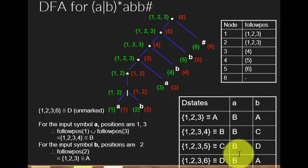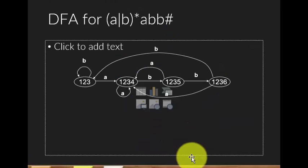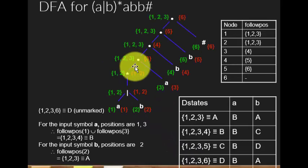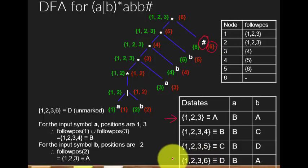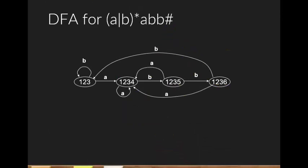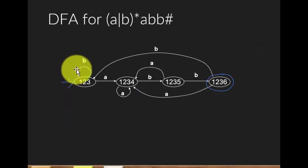That's the final transition table. The last step is to draw the DFA from this table. For the accepting state: whichever state contains position 6 (the hash symbol) is the accepting state — so state {1,2,3,6} (state D) is the accepting state. State {1,2,3} is the start state. That's how you convert a regular expression to a DFA using the syntax tree method. It's a lengthy process, but with practice you'll get the hang of it. Hope this was helpful — give a thumbs up and subscribe!